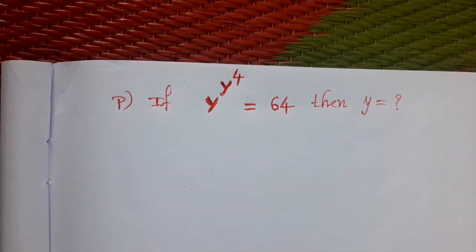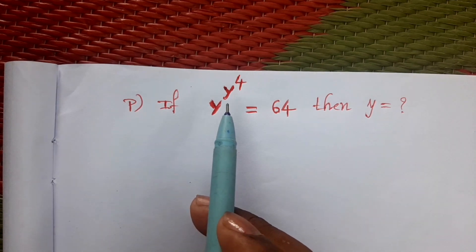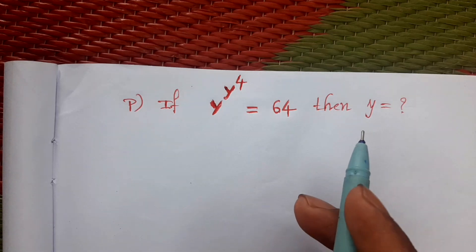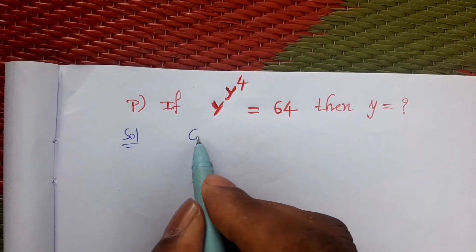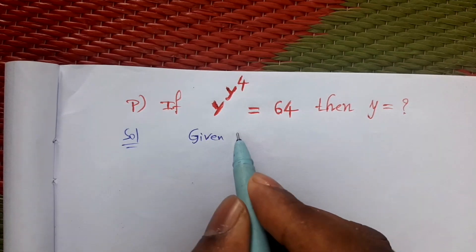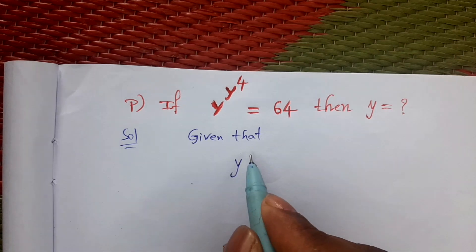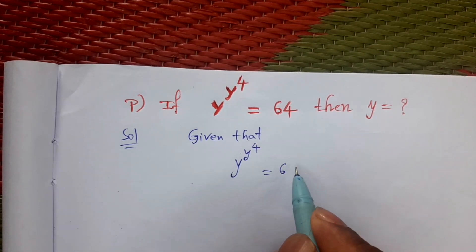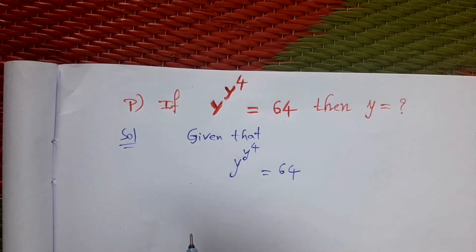Hi everyone. See this problem: if y to the power y to the power 4 is equal to 64, then y is equal to how much? See the solution. First, write the given values: y to the power y to the power 4 is equal to 64. We have to find the value of y.